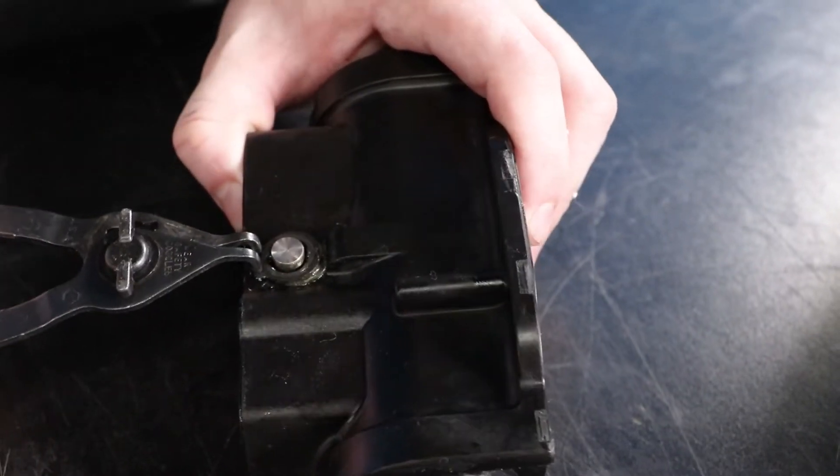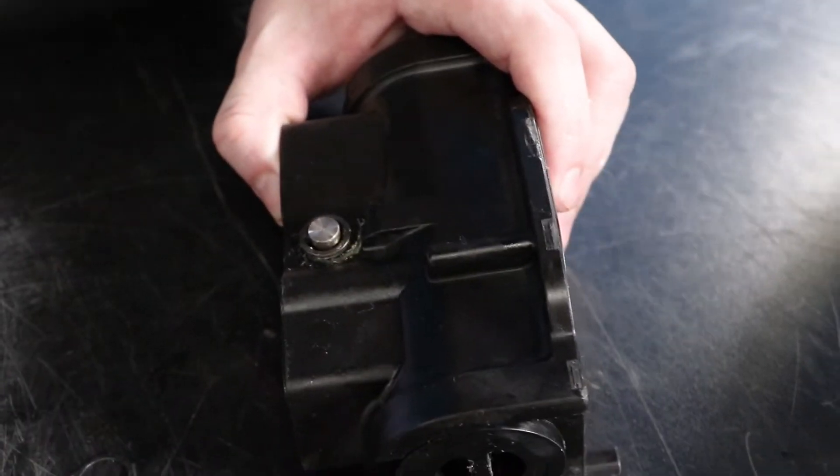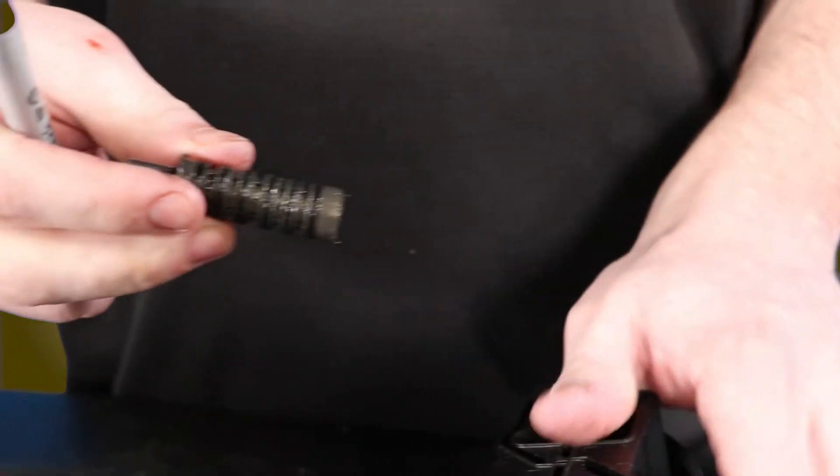We are going to use the snap ring pliers to remove the retaining ring from the valve body to gain access to the sleeve and spool set. And be sure to inspect the o-rings for any wear.